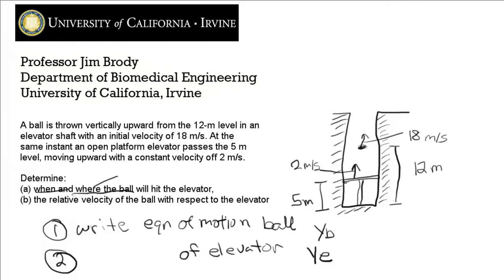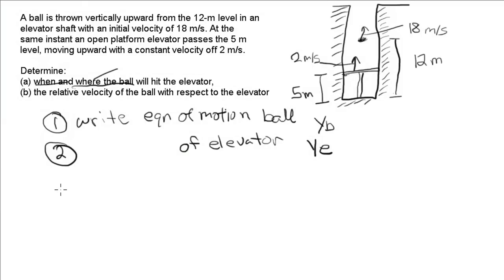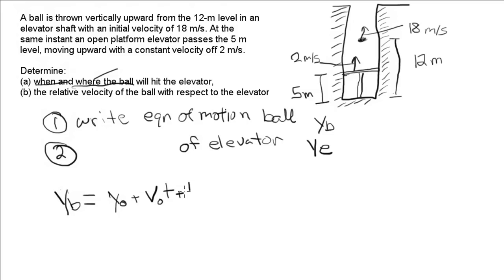First step is to write the equation of motion for the ball. It's uniformly accelerated motion, so it looks like: y sub b equals initial position plus initial velocity times t plus one half times acceleration times t squared. Plugging in: the initial position is 12 meters and the initial velocity is 18 meters per second.